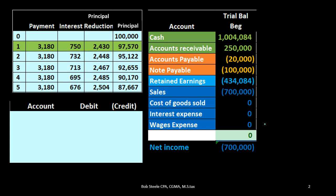If you're working with a bookkeeper or want to make data input as easy as possible, one option is to just write a check and record it all to notes payable, even though you'll be recording too much to the principal and not recording the interest at all. Then plan on adjusting it at the end of the time period according to the amortization table — either with an outside CPA firm or as a bookkeeper. That's one way to make data input easy and then correct it in the adjusting process.